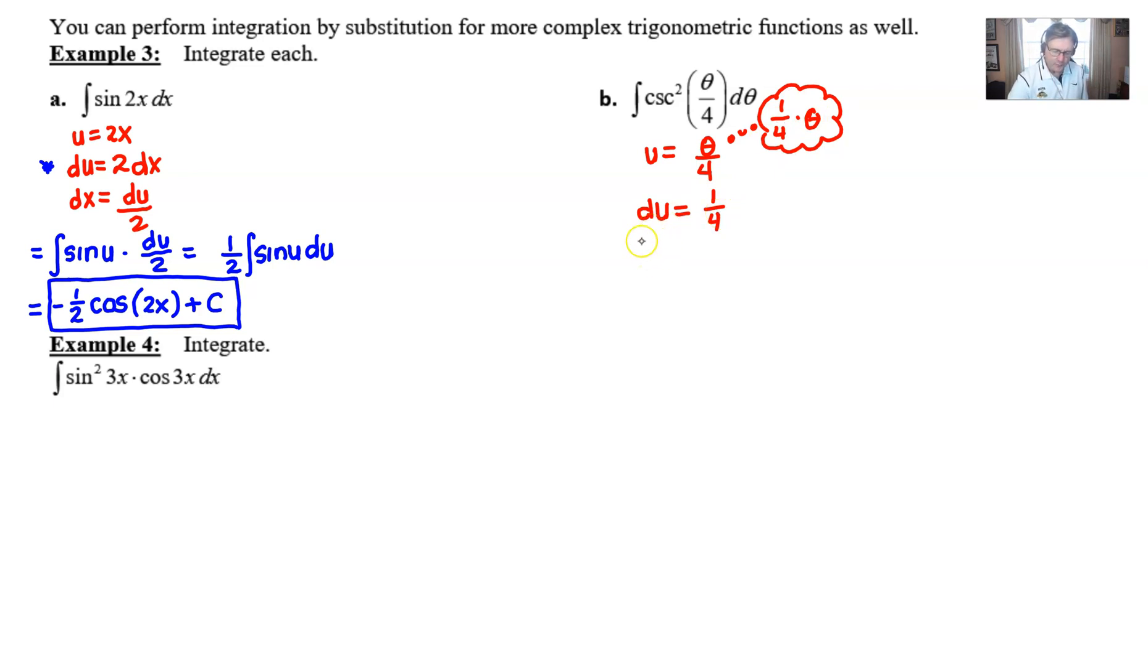But this du over d-theta that we would have had here will multiply over to the other side, and then we have one-fourth d-theta.